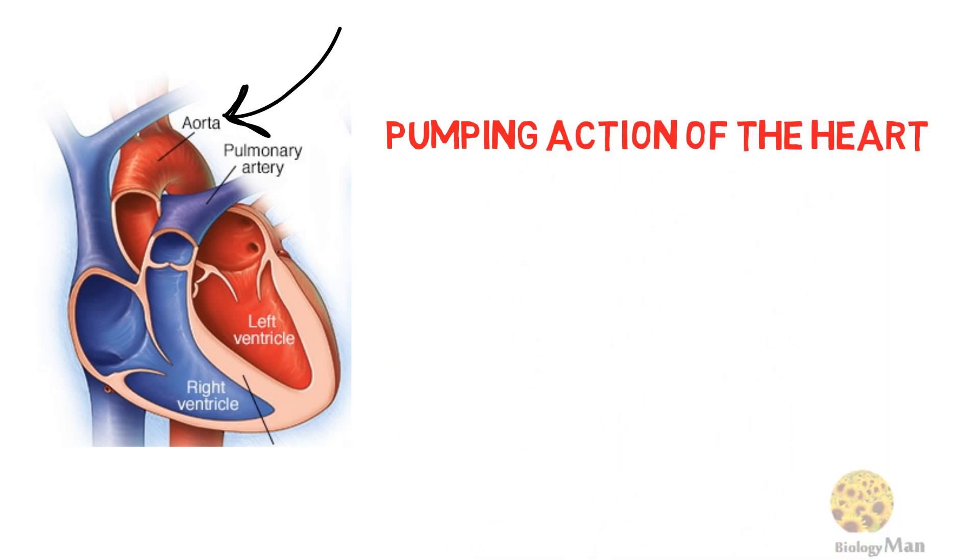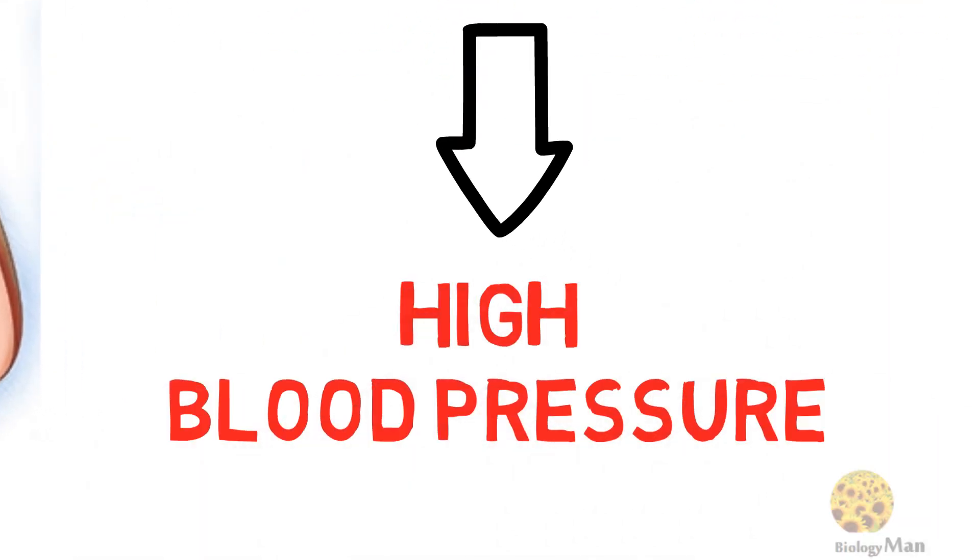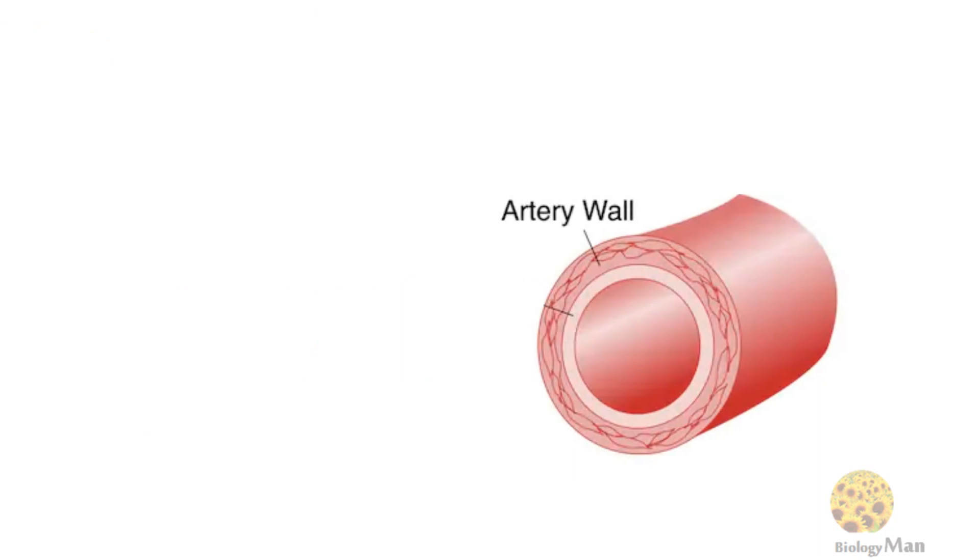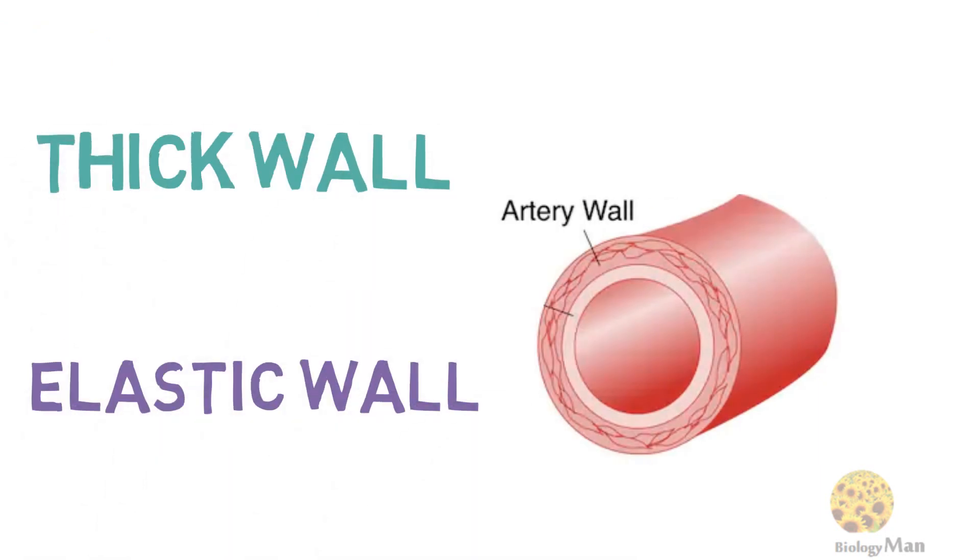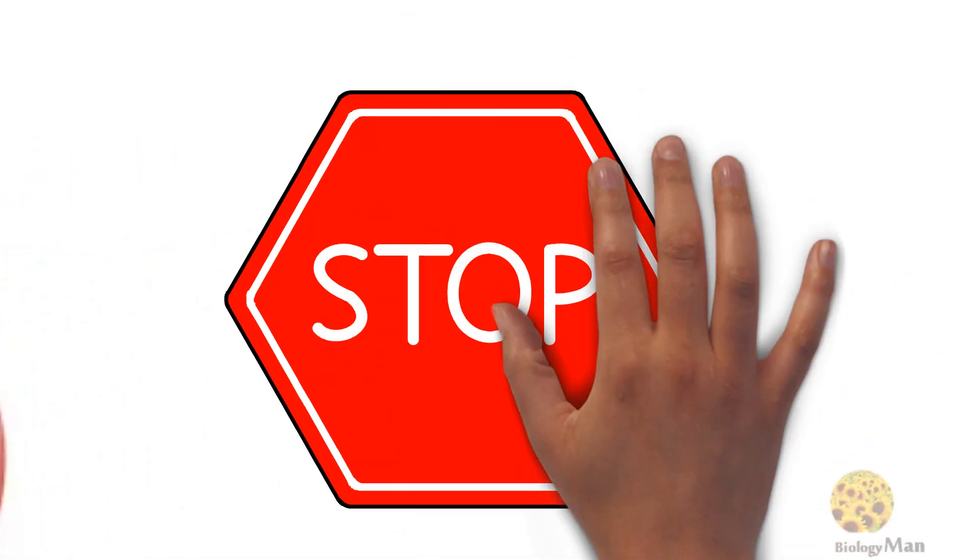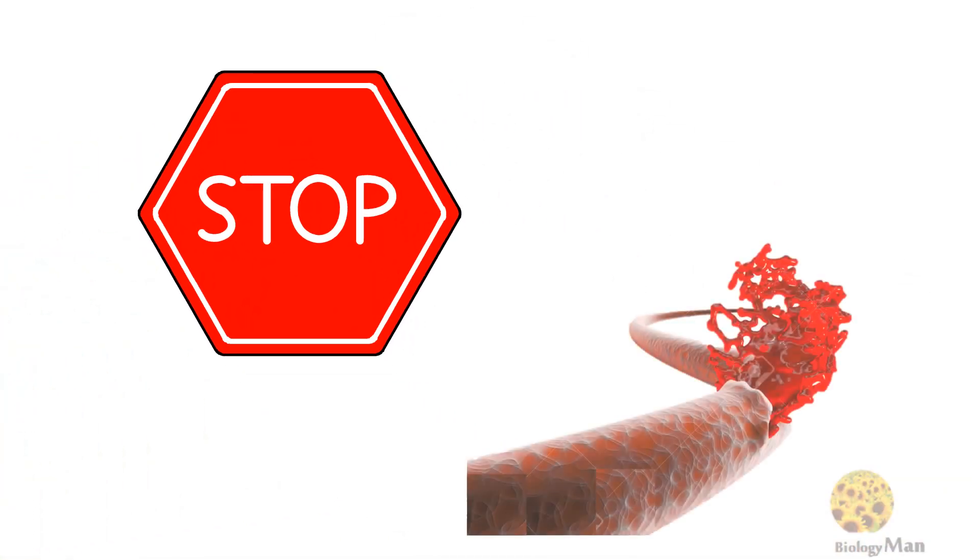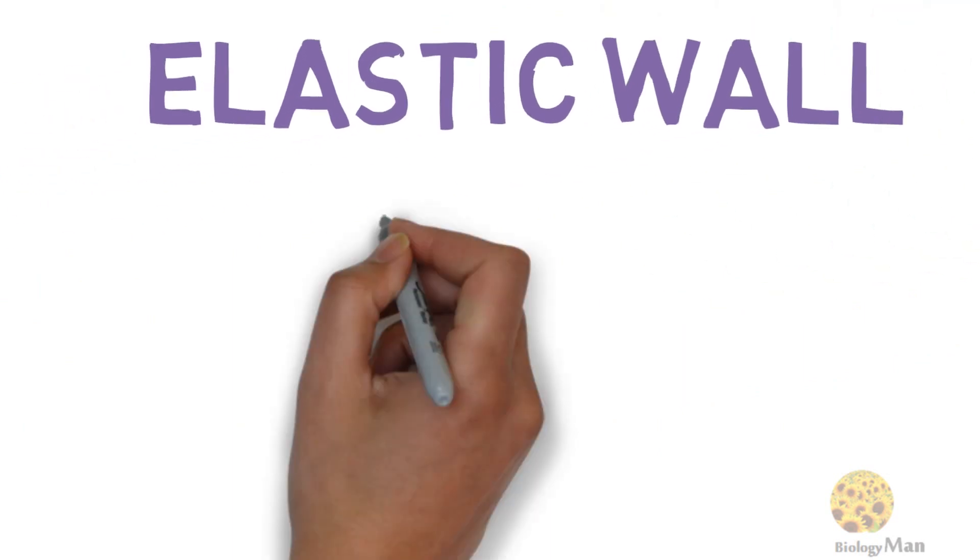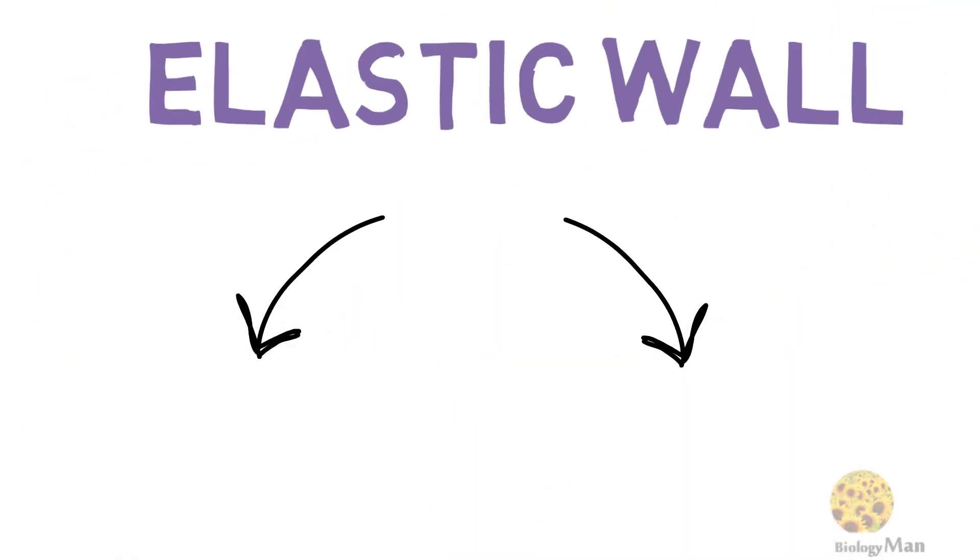Arteries have a thick and elastic wall to withstand the high blood pressure. This saves the arteries from bursting. On the other hand, the elastic nature of arteries allows distension and recoil to occur.